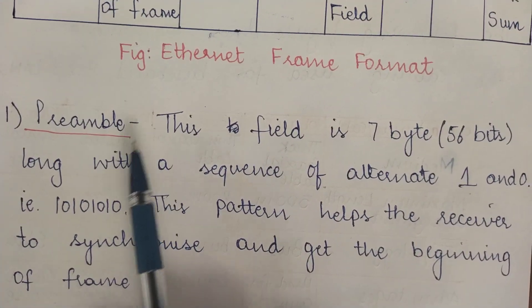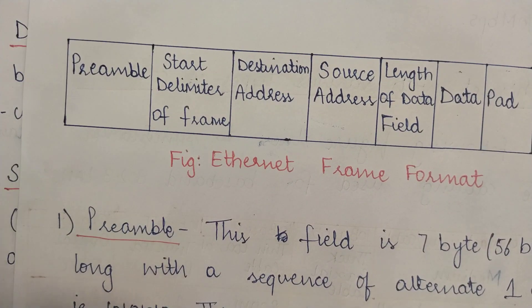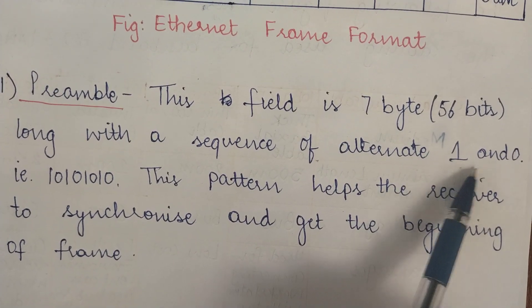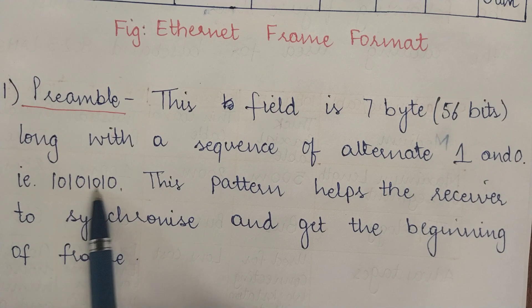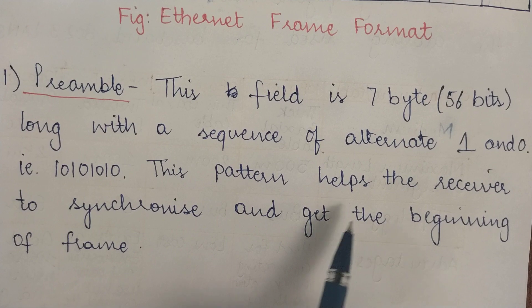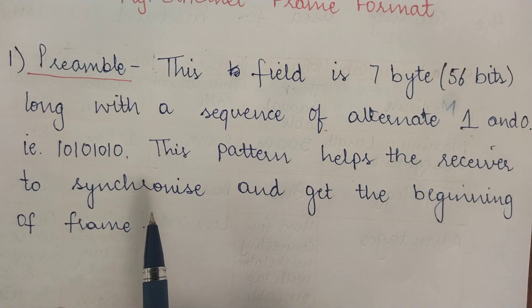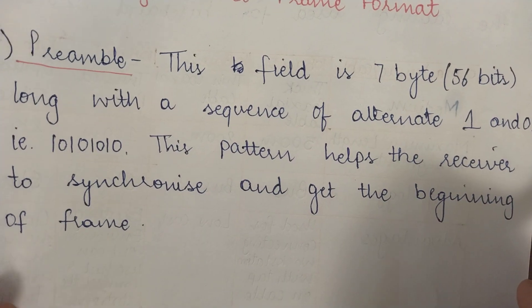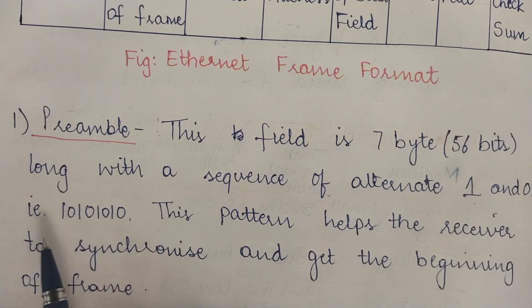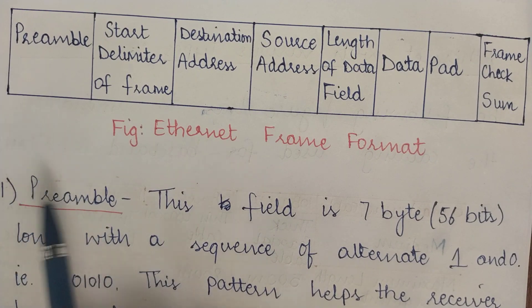The first field is the preamble, which is 7 bytes (56 bits) long. It contains an alternating sequence of ones and zeros (1,0,1,0,1,0,1,0...). This pattern helps the receiver synchronize and identify the beginning of a frame, so it does not confuse it with a previously received frame and immediately recognizes a new frame starting.